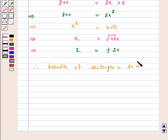Therefore, the length equals twice the breadth. That is 20 times 2, which equals 40 meters.